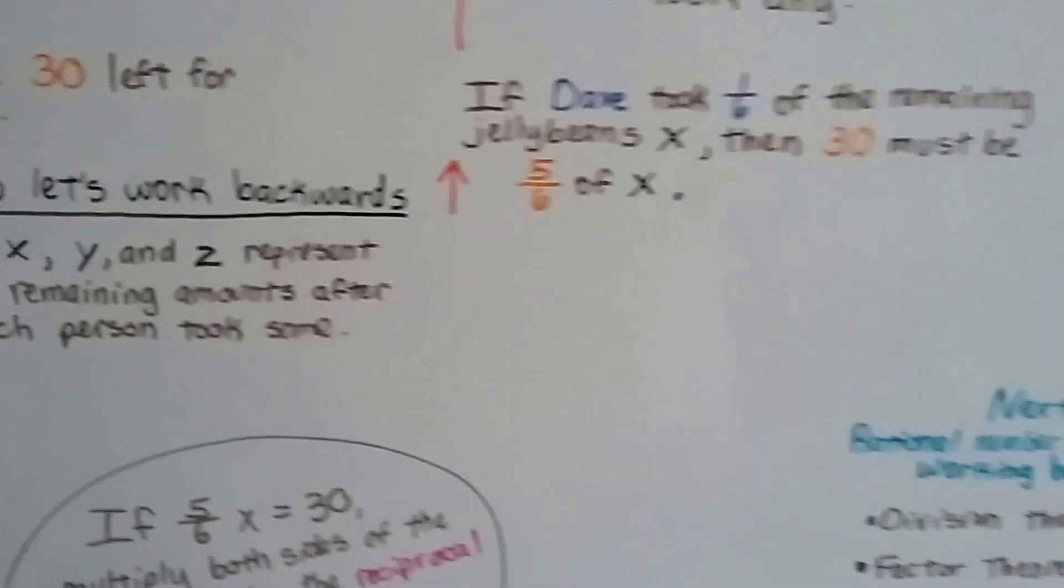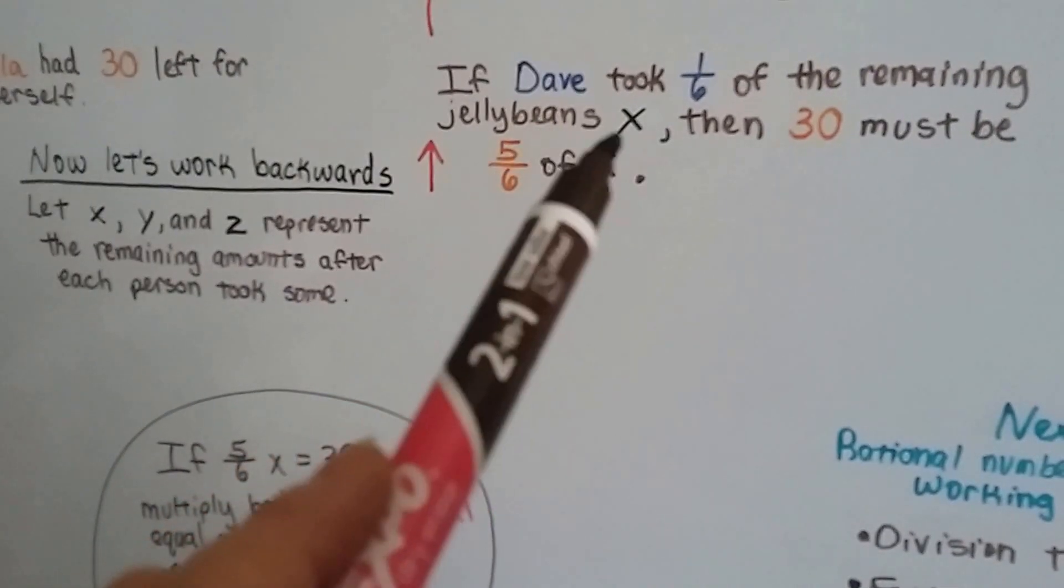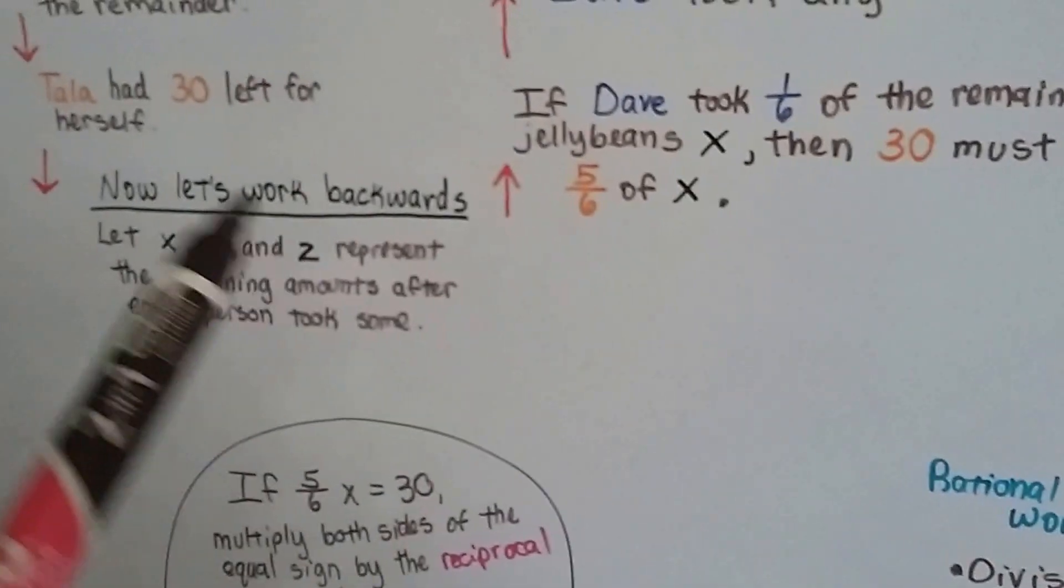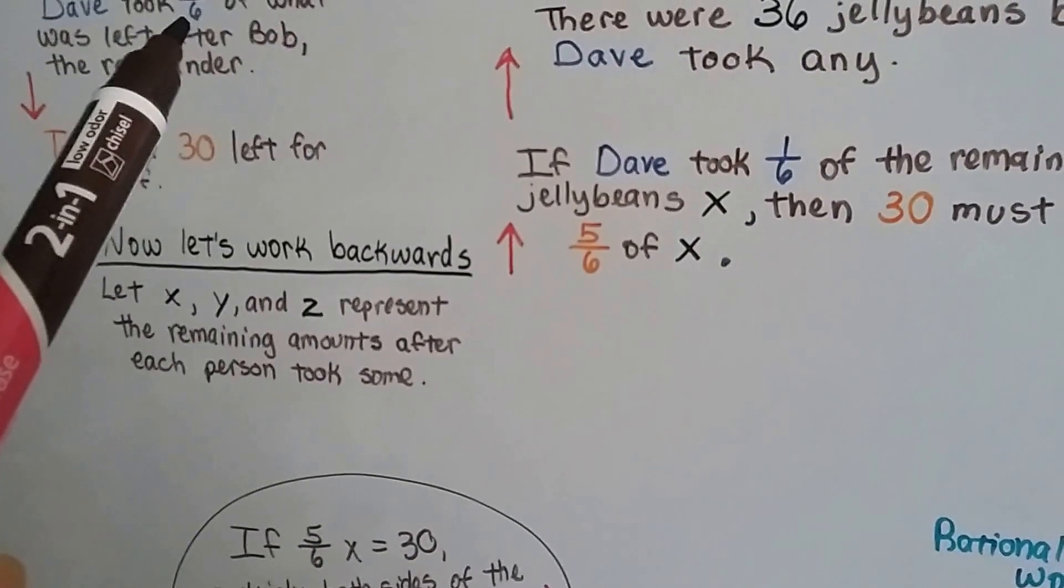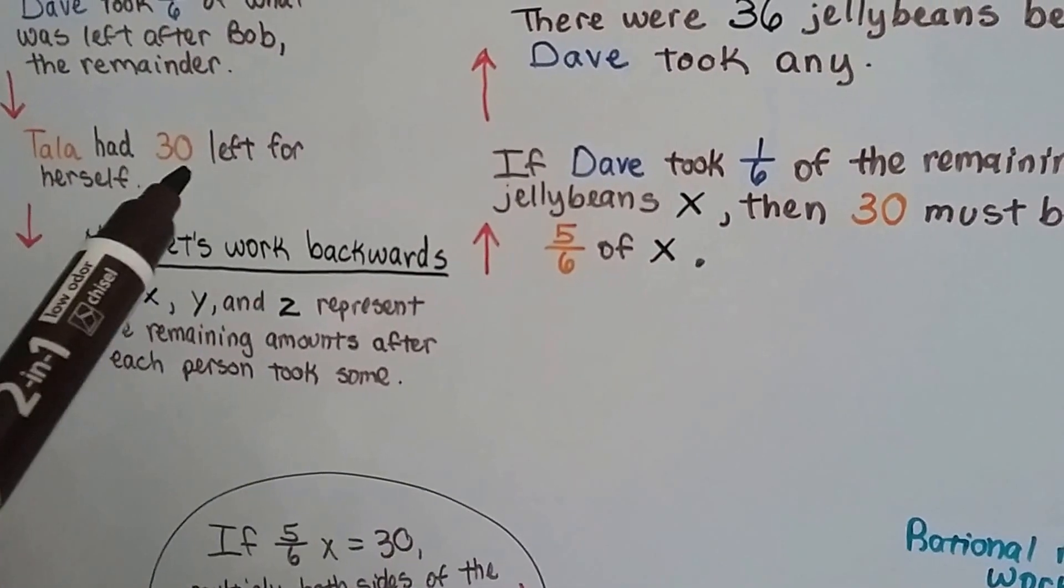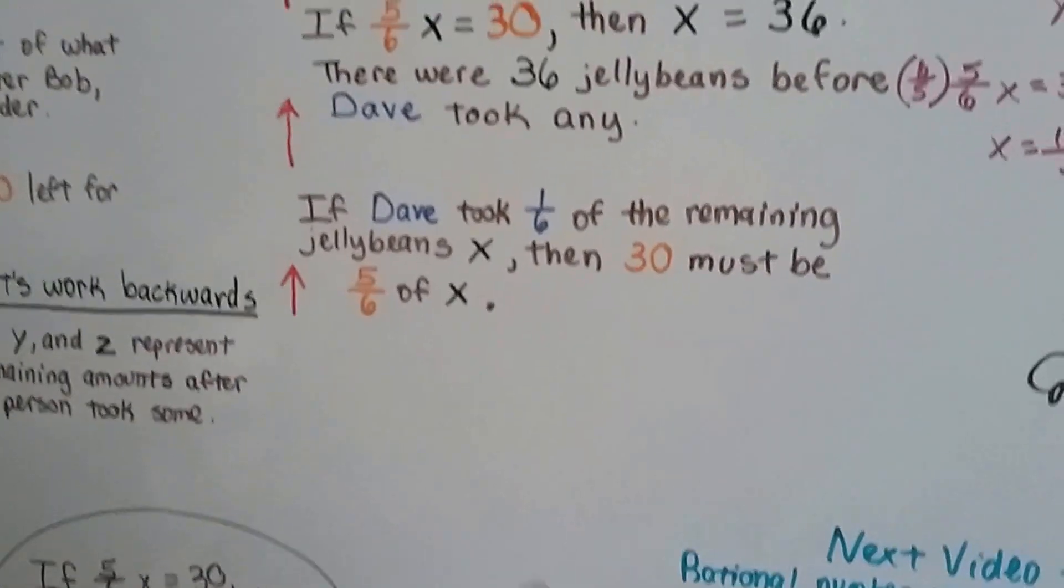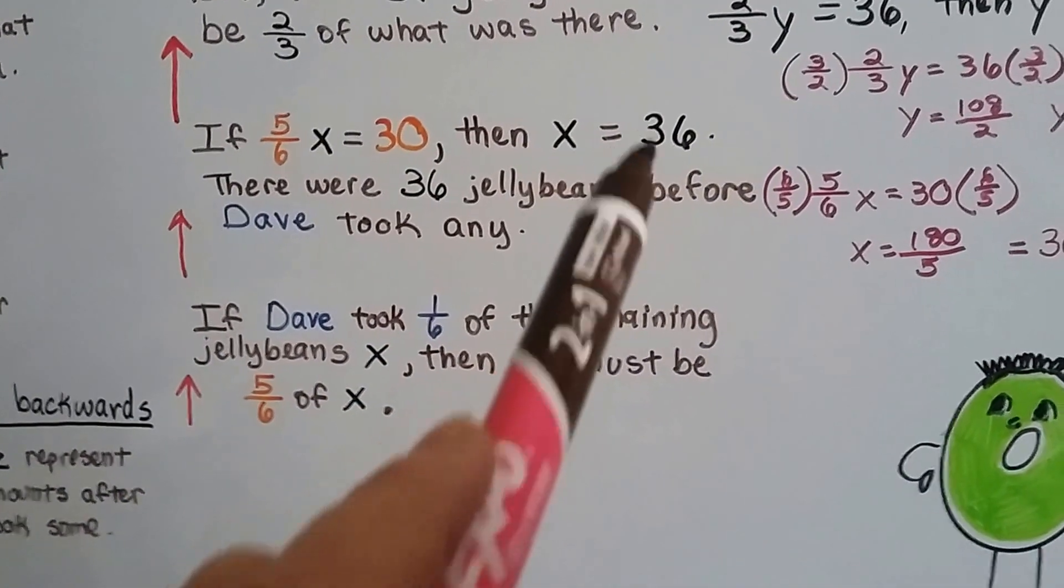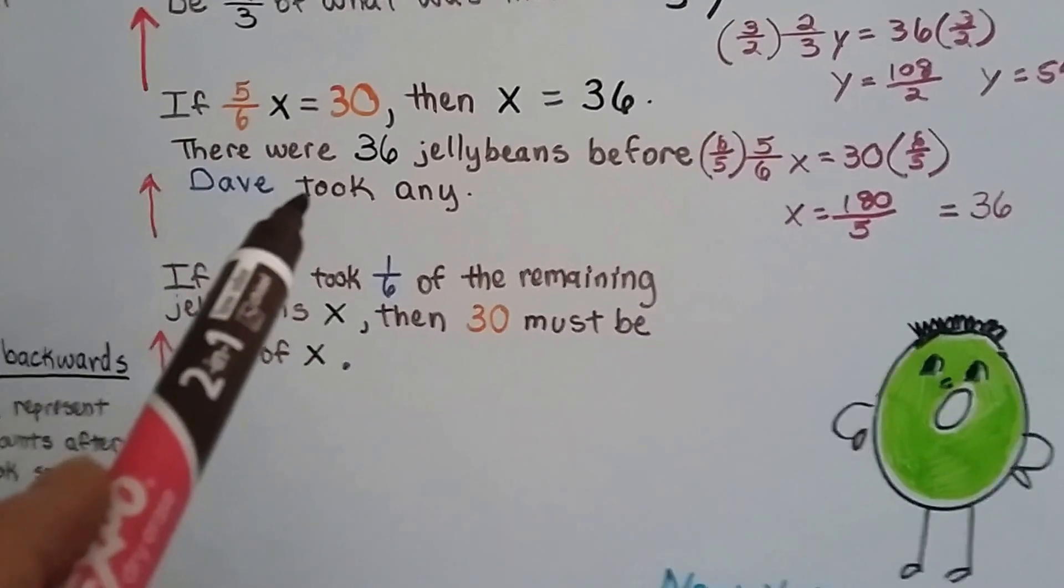So the first thing we've got is if Dave took one-sixth of the remaining jelly beans, X, then thirty must be five-sixths of X. She had thirty left over for herself after he took the one-sixth. So that means the thirty must be five-sixths. If five-sixths X equals thirty, then X equals thirty-six. There were thirty-six jelly beans before Dave took any.